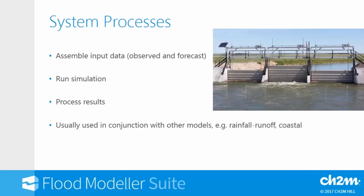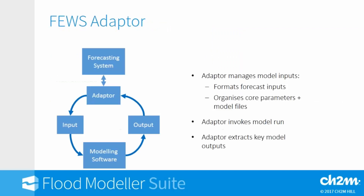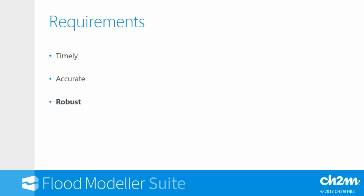Summary of the system processes: we assemble our input data - whether observed data, forecast data, or a combination - run the simulation, and process the results. This is usually used in conjunction with other models, such as an upstream rainfall runoff or another hydraulic model upstream, or a coastal model to generate the tidal boundary. The FEWS adapter exports data in its own format, the adapter converts that into Flood Modeler input format, runs Flood Modeler, then converts the native data format into FEWS-compatible format for the forecasting system to read back.